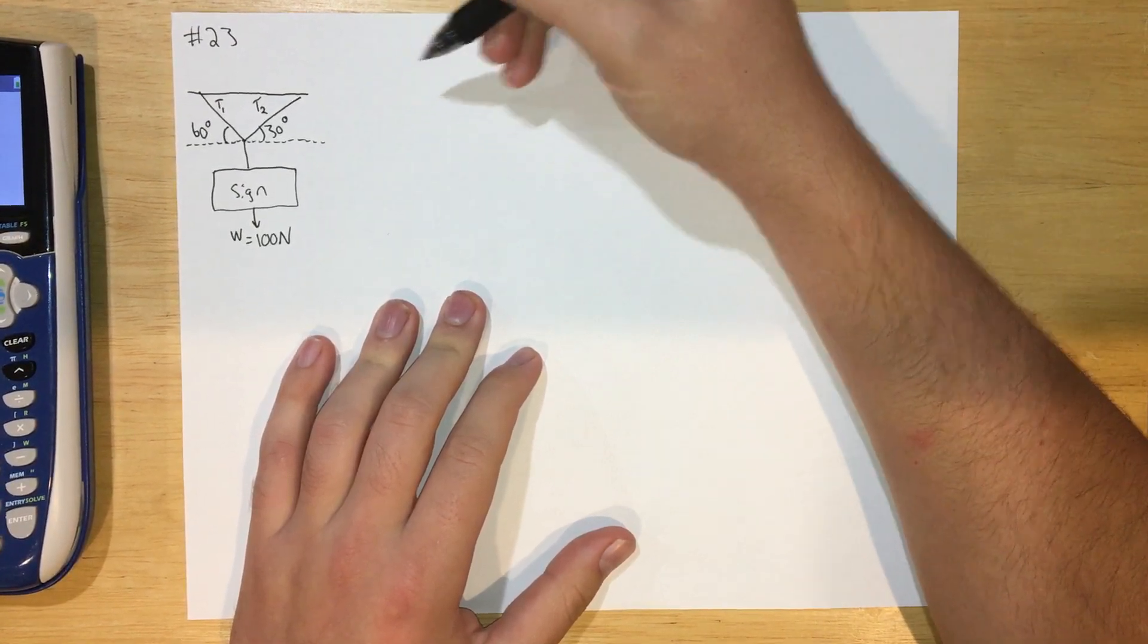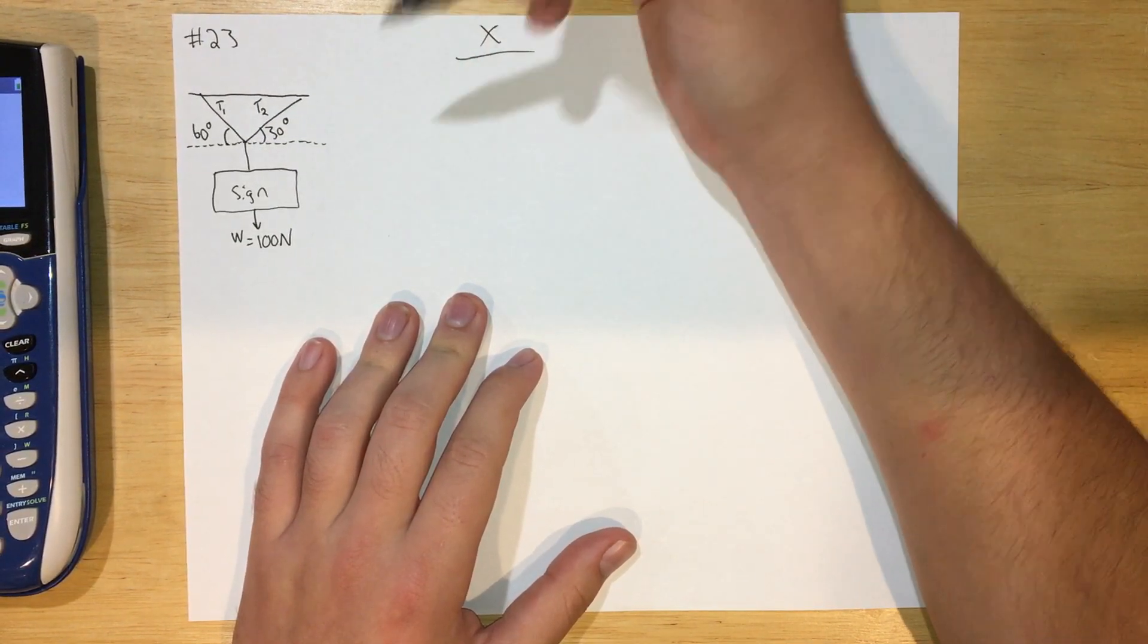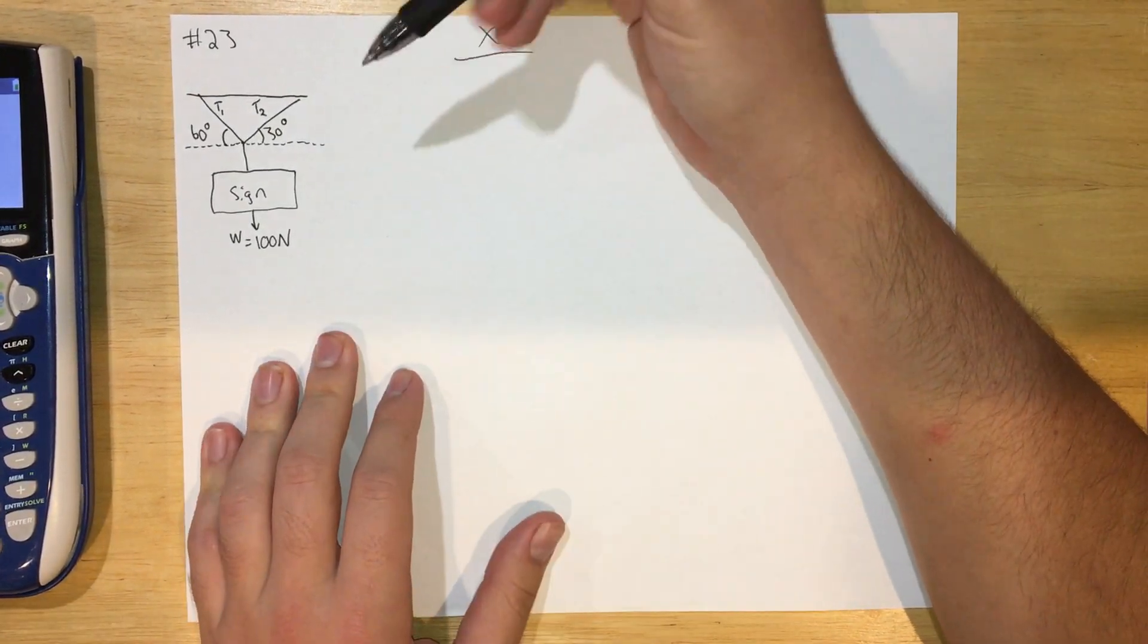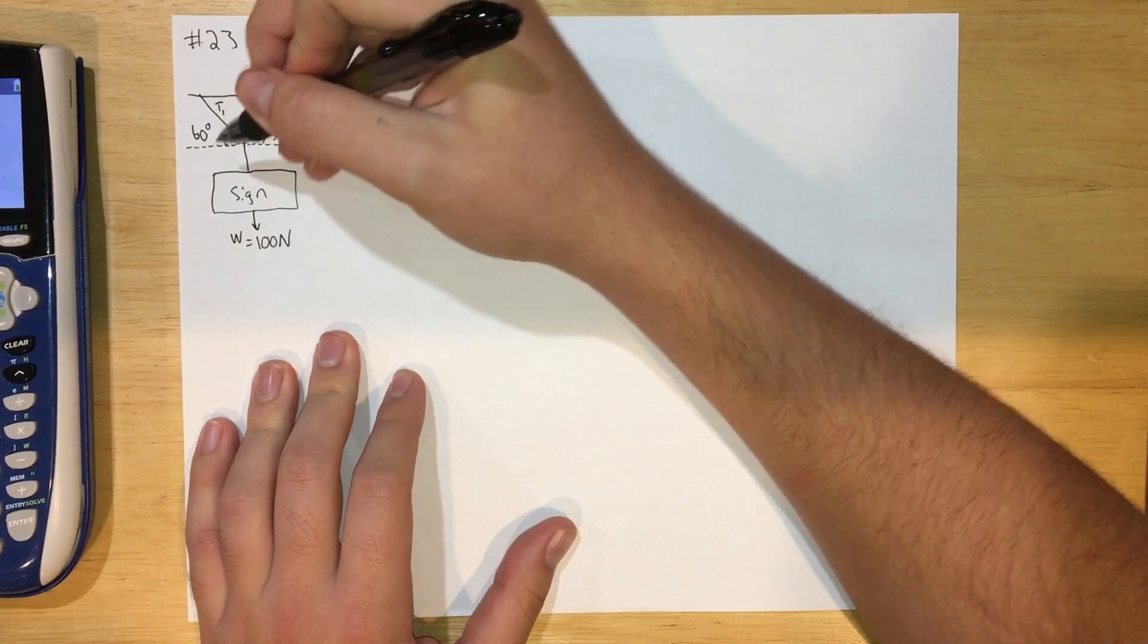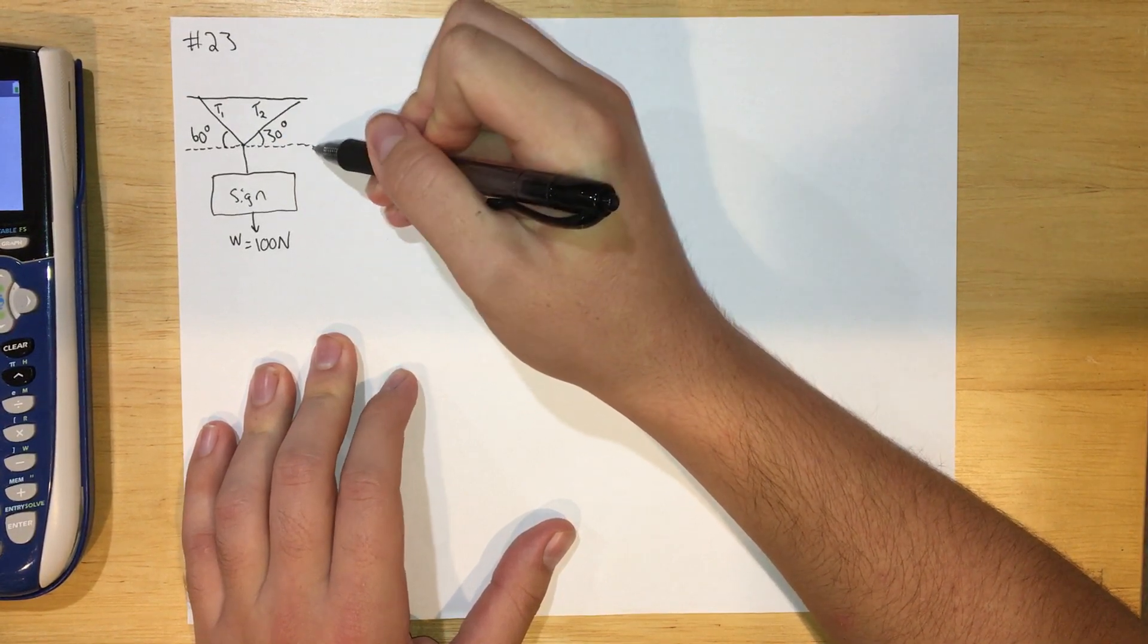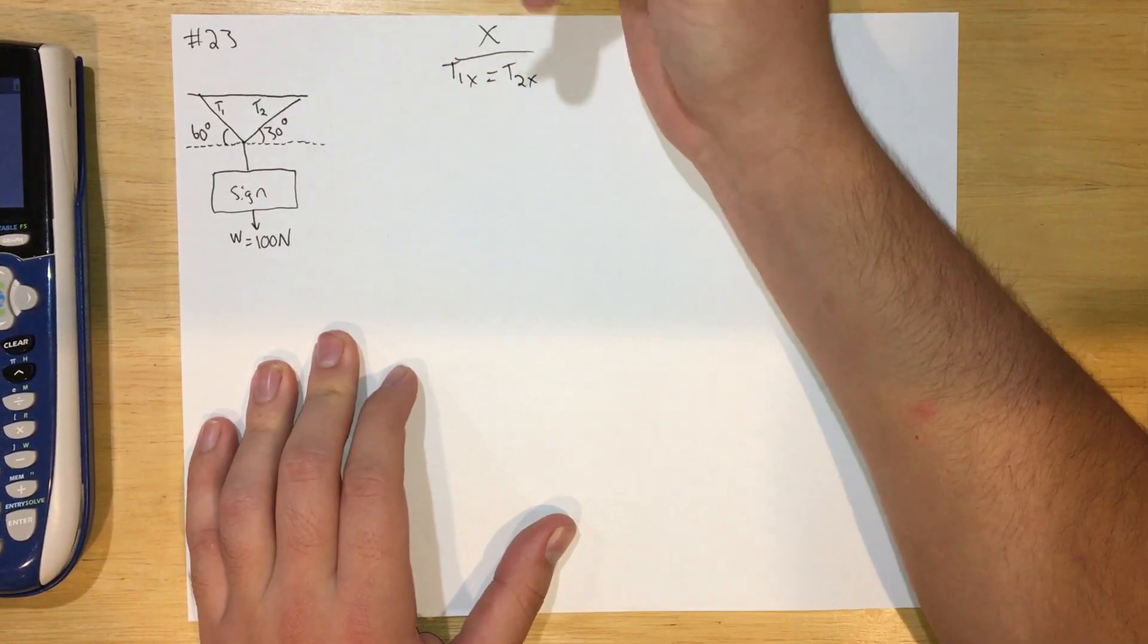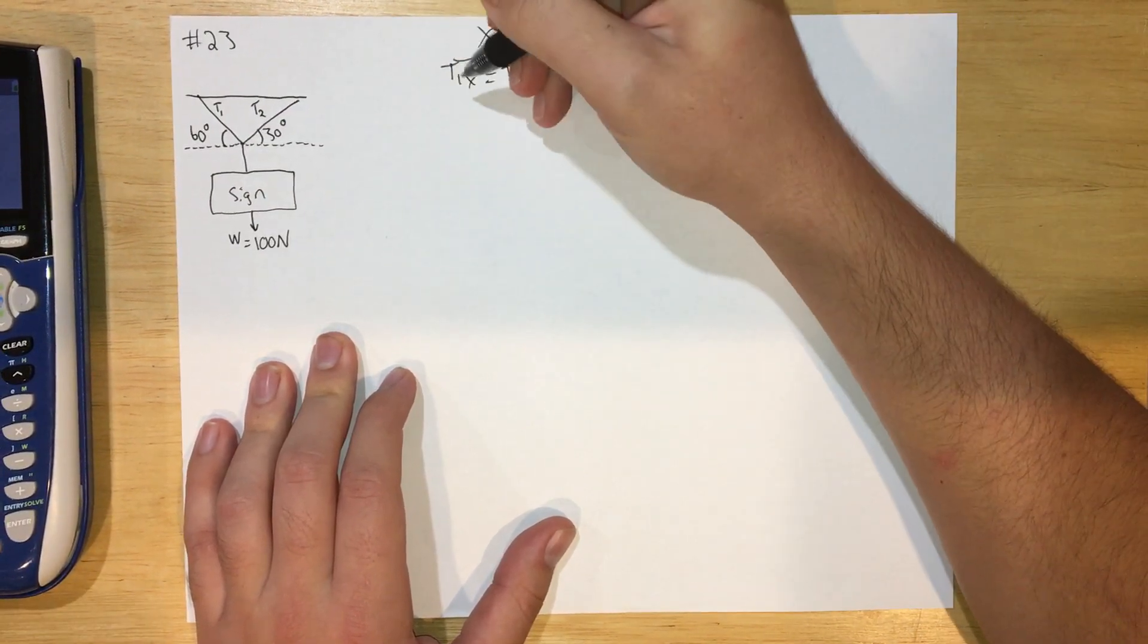So let's start by looking in the X direction. In the X direction there's no acceleration, so the forces in the X direction must sum to zero. Another way to say that more conceptually is that the forces pulling left are going to equal the forces pulling right. For left and right we have the X component of this tension here going left and the X component of tension 2 going right, so they're going to be equal. So T1x equals T2x, and this is because the sign is not accelerating left or right.